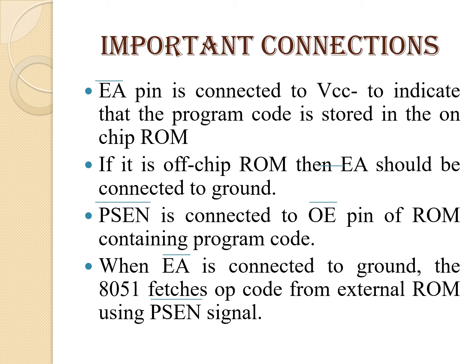EA bar, the external access pin, is connected to VCC to indicate that program code is stored in the on-chip ROM. If off-chip ROM is used, EA bar must be connected to ground. PSEN bar, that is program store enable, should be connected to the OE bar output enable pin of the ROM containing program code. When EA bar is connected to ground, the 8051 fetches code from external ROM using the PSEN bar signal.